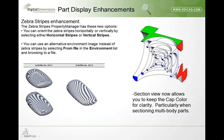Moving on to part display enhancements. In SolidWorks 2012, zebra stripes have changed the way they function. In the zebra stripe property manager you now have two options: you can orient your zebra stripes horizontally or vertically. Additionally, you can use an image instead of zebra stripes by choosing what picture to show in the environment list. They've also changed how section view works — section view now allows you to keep the cap color for part clarity, particularly useful if you're sectioning a multi-body part, enabling you to see which face is being cut and from which direction.